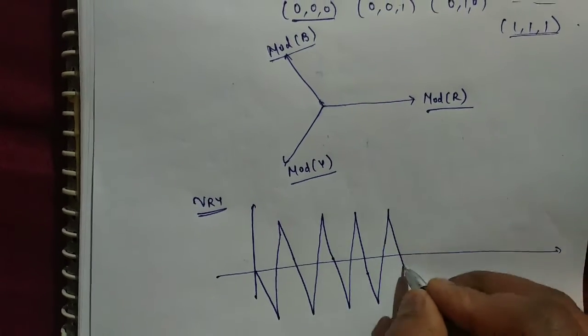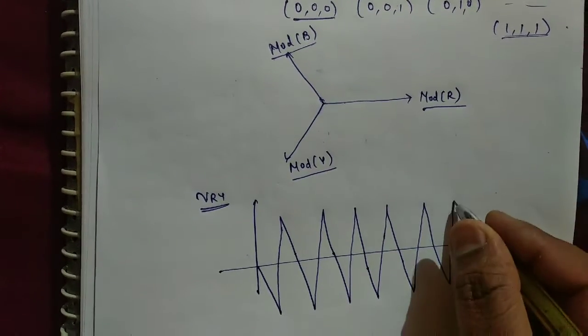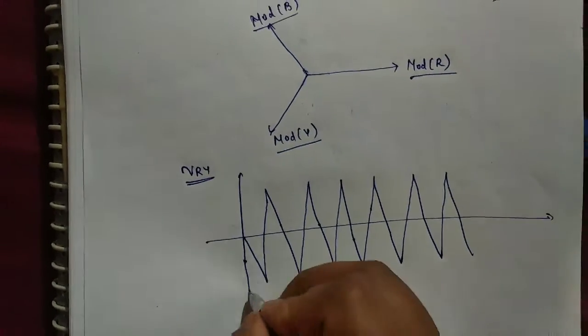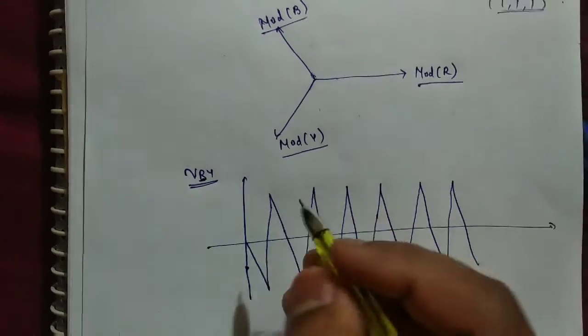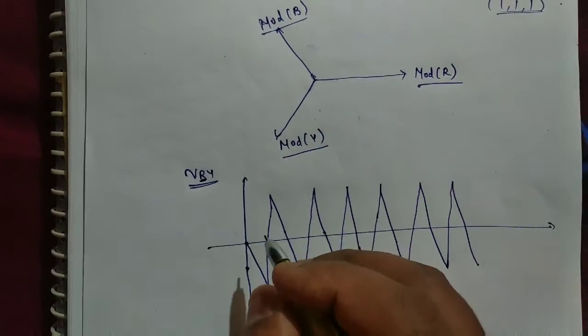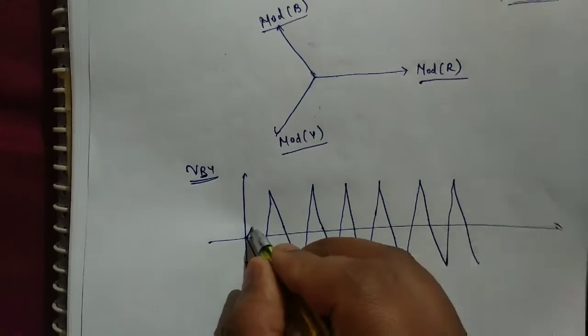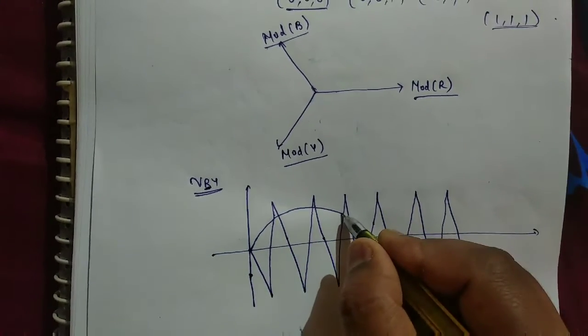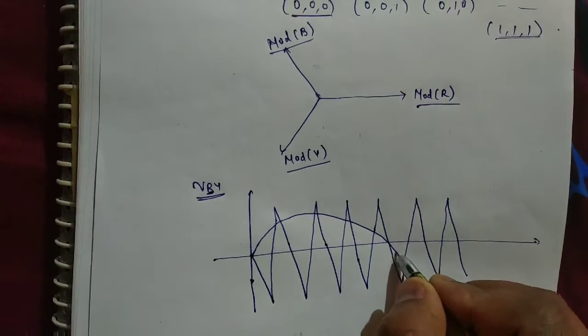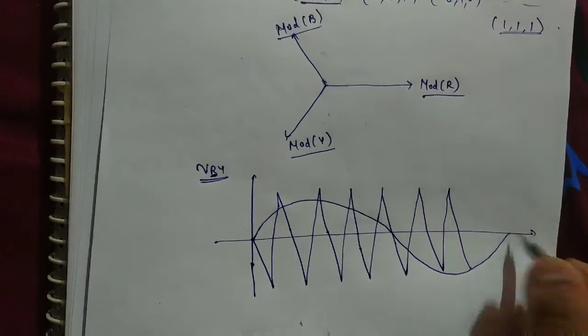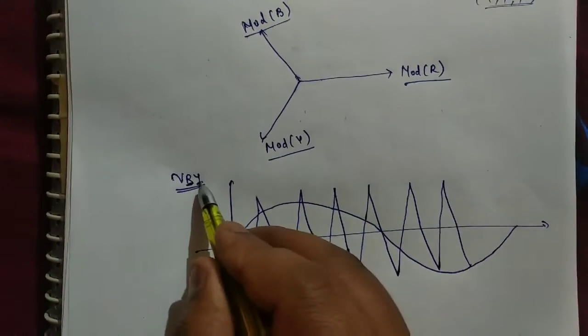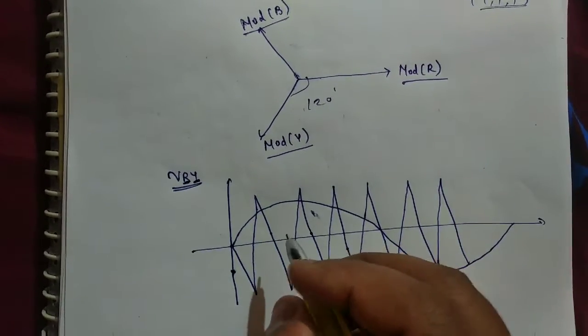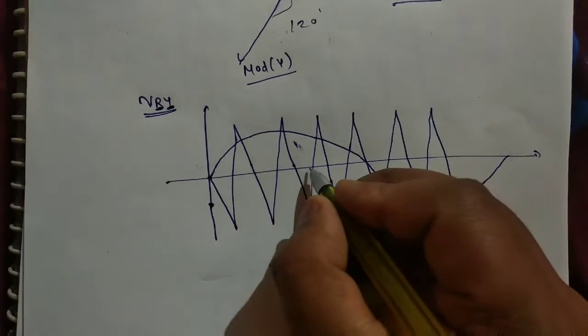So the signal will be like this - carrier signal like this. Now first of all we have to draw mod R signal, let it be sin(ωt).